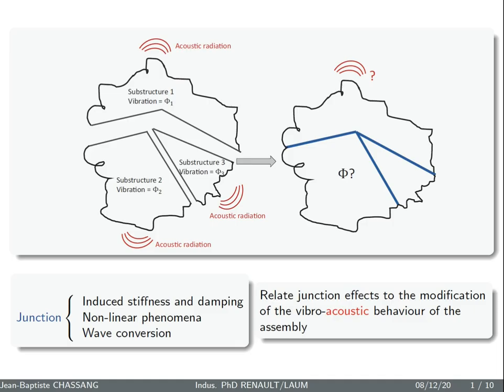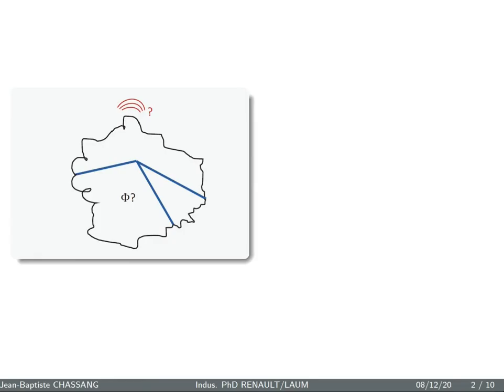This is caused by the junction with induced stiffness and damping, nonlinear phenomena like friction and wave conversion. The main goal here is to relate junction effects to the modification of the vibro-acoustic behavior of the system.